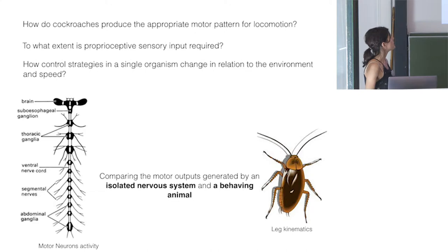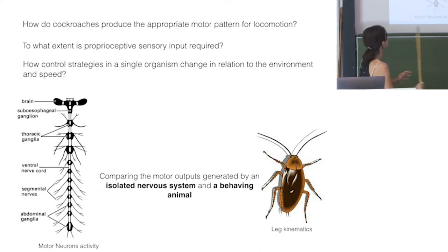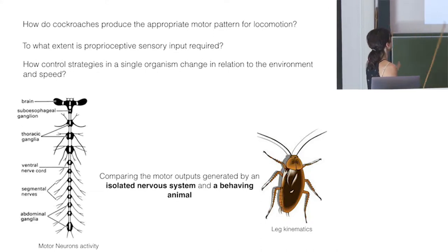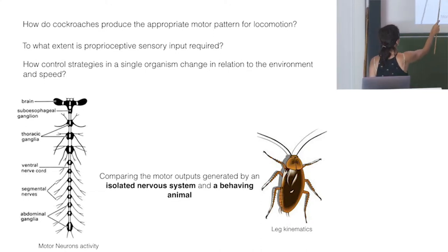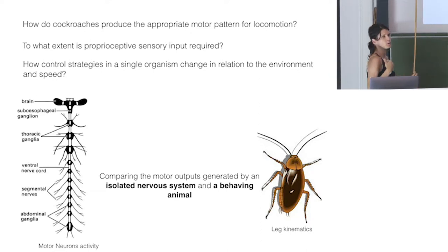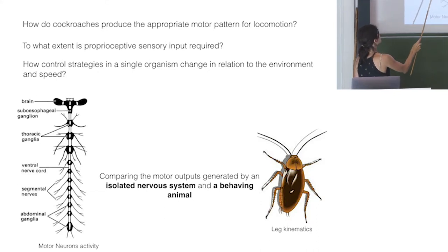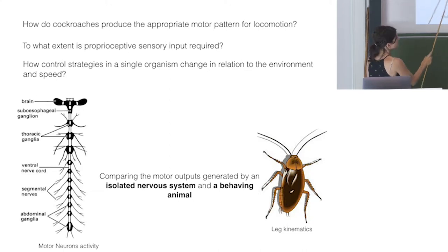To answer these questions we look both at the nervous system and behavior. Quickly for non-biologists: insects have a brain, then thoracic ganglia — comparable to our spinal cord — controlling the legs, wings, and appendages, and then abdominal ganglia, each controlling one segment of the abdomen.